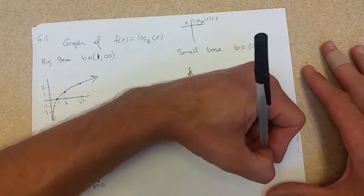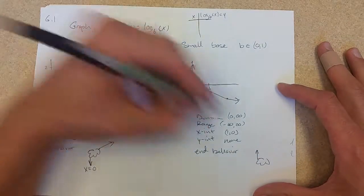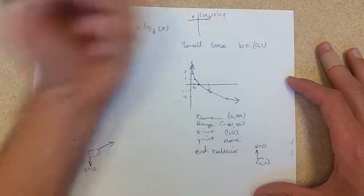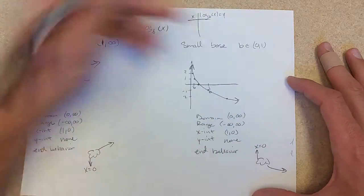Really similar, except we have a vertical asymptote, still x equals zero, but it's going to approach on the top and on the right side, like that.